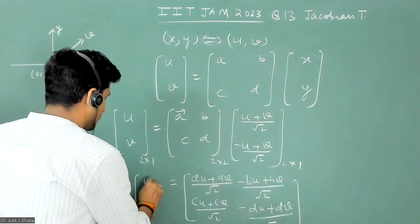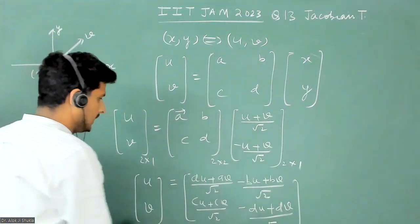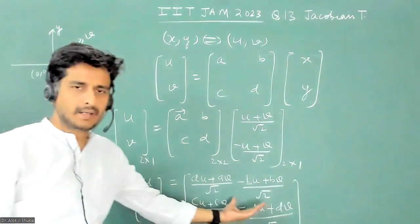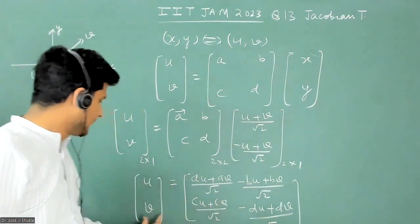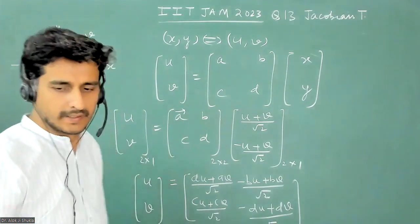And this is equal to u, v. And now because these are equal matrices, so this u is equal to this and this v is equal to this.